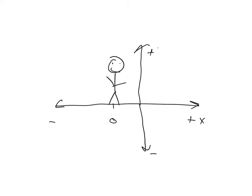So we established a coordinate system: positive X, positive Y, negative Y, negative X. And we're like, well, this is the five meter point. That makes this the negative five meter point, and this is the negative three meter point. So we took this physical situation — like where I'm standing — and we established a coordinate system.